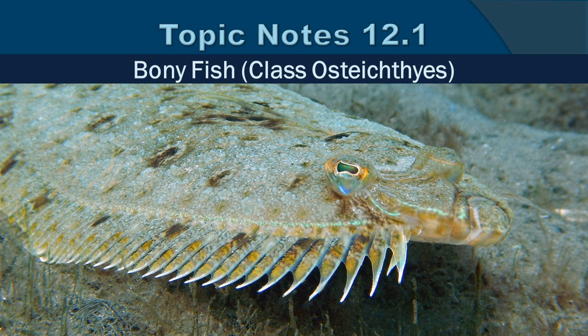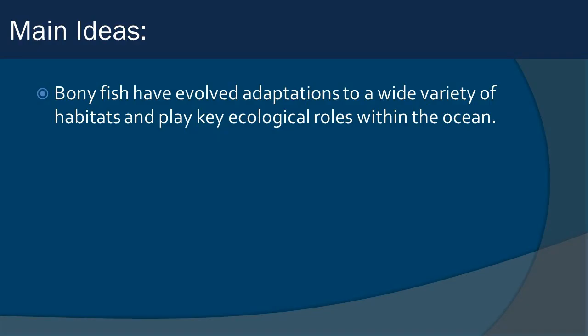The fish you're seeing here in this picture is a flounder, and it's a very unique fish in the fact that in its larval form, it is oriented very much like a normal fish with an eye on both sides of its body. It actually metamorphoses as it grows, and one eye migrates to the same side as the other eye, becoming a very flat fish that lives on the bottom. We're going to be really focusing on form and function throughout this talk. Our main idea today is that bony fish have evolved adaptations to a wide variety of habitats and play key ecological roles within the ocean.